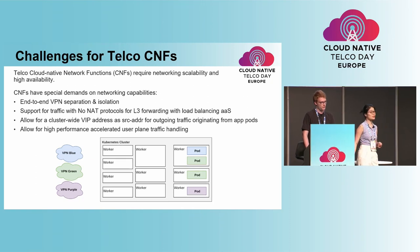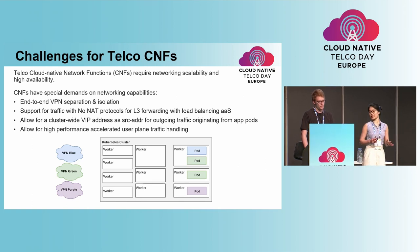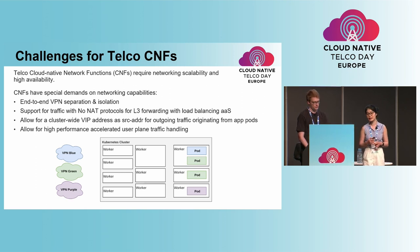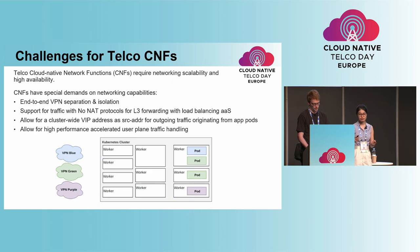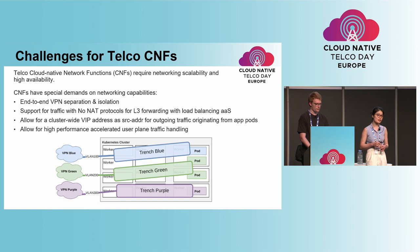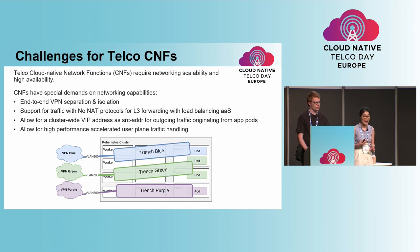First, let's talk about challenges for telco cloud network functions, or CNF in short. CNFs require networking scalability and high availability. In addition to that, CNFs also have special demands on networking capabilities, such as end-to-end traffic separation and isolation. It is well known that network address translation is problematic for some telco protocols, such as SIP or SDP. Hence, there is also a requirement to support traffic without NAT for L3 forwarding with load balancing as a service.